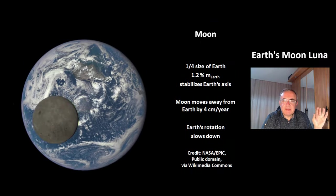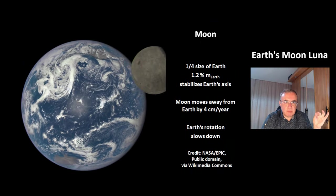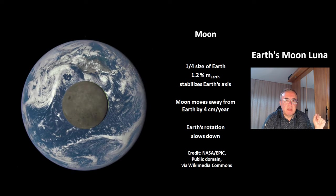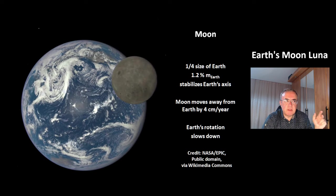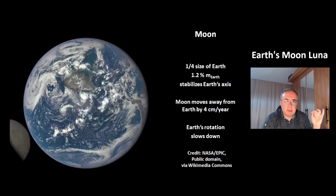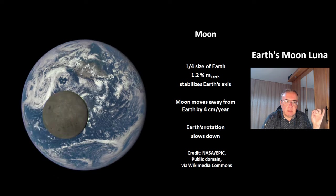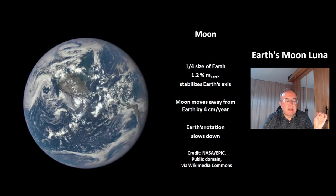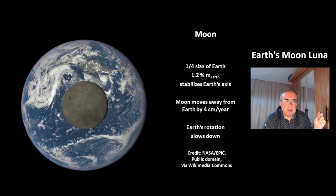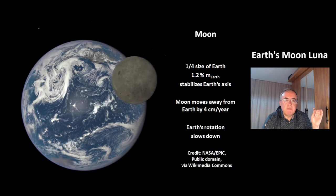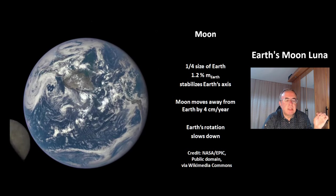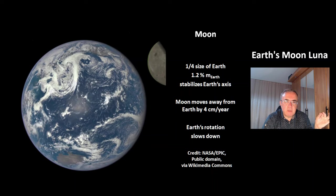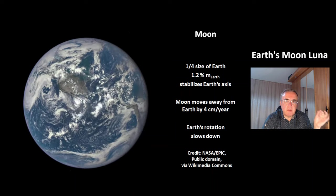This is a comparison of the Moon and the Earth. The Moon has about one quarter of the size of Earth, which is enough to stabilize the rotation axis of planet Earth. The Moon moves away from the Earth by 4 cm every year, which means the rotation of planet Earth is slowing down.